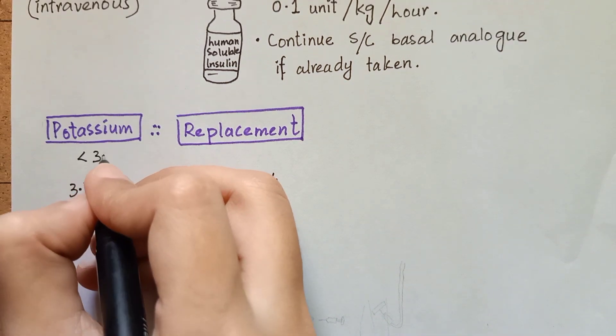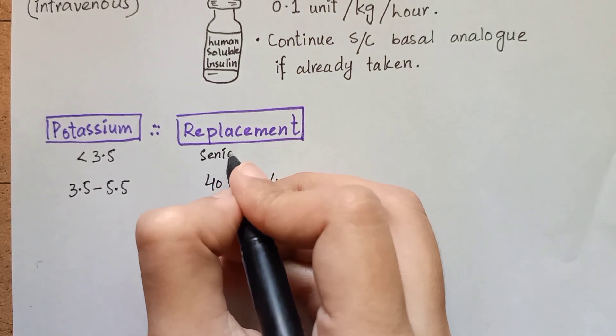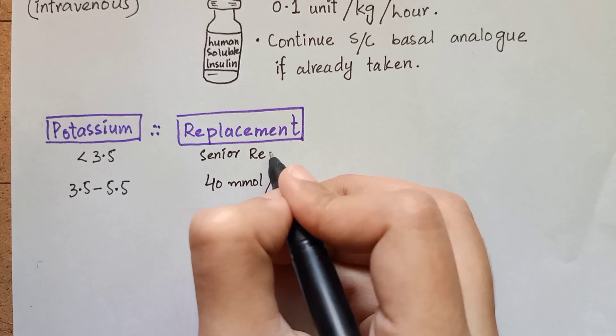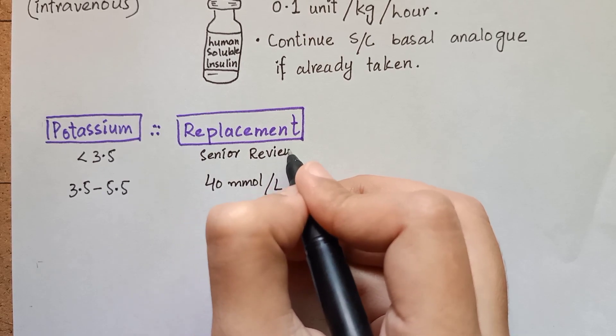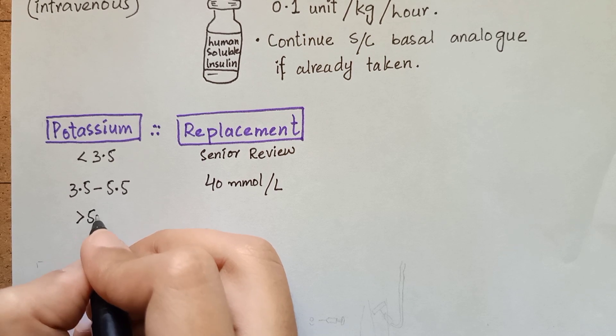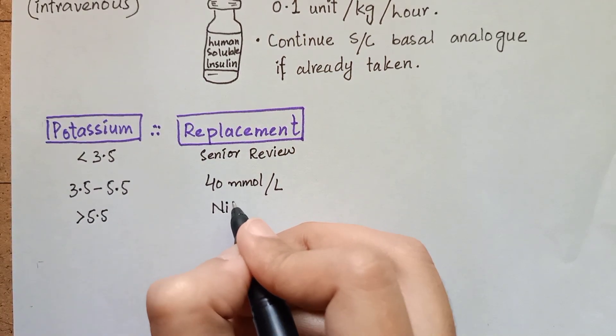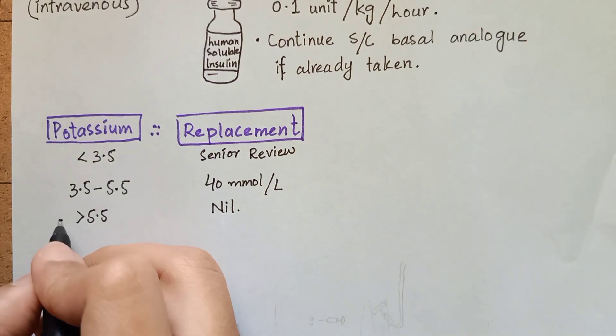If potassium level is below 3.5 millimole per liter, you will take senior review because in this case additional potassium of more than 40 millimole per liter is necessary. If potassium level is more than 5.5 then you don't need to replace potassium.